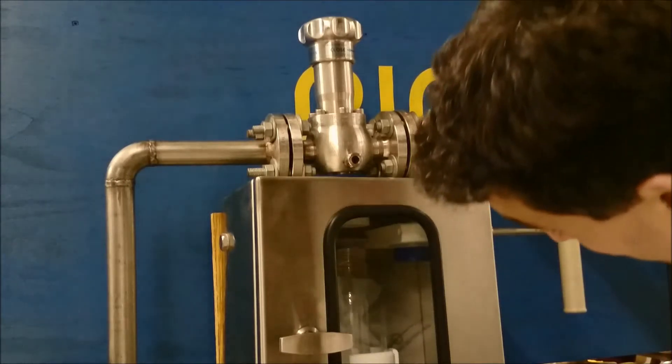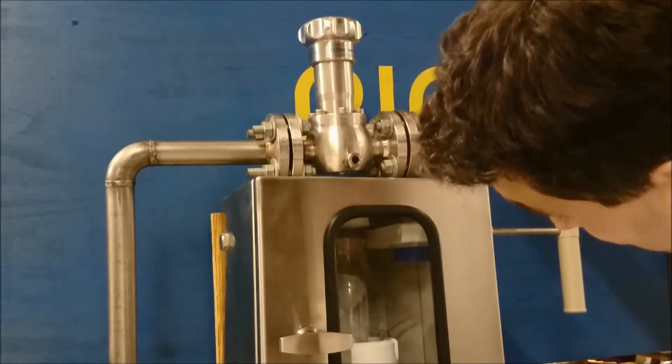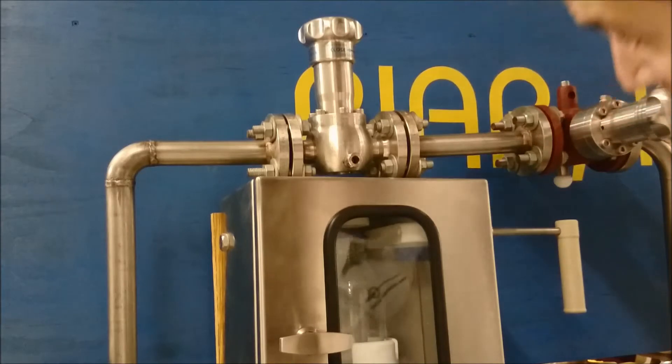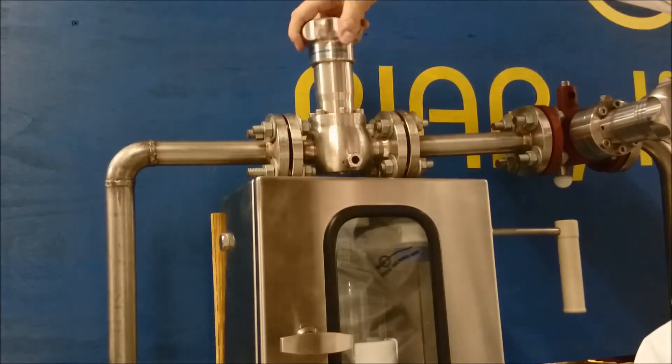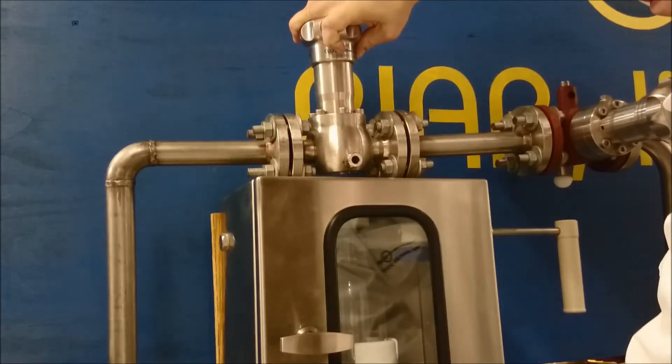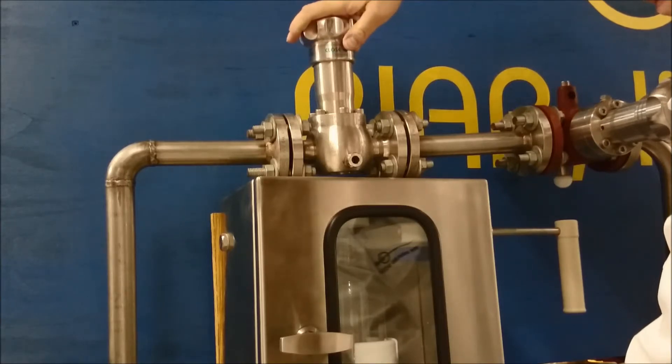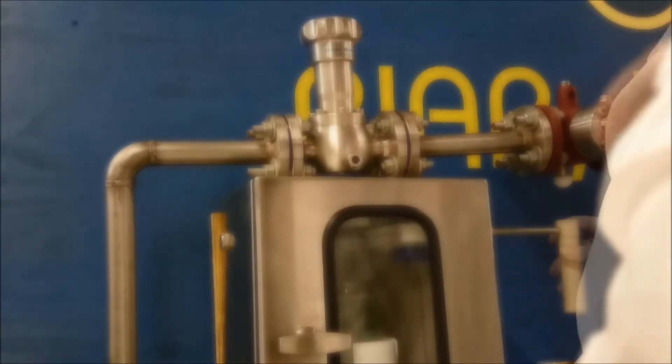He moves the cap out of the way so that the bottle can now be pushed up all the way under the valve right at the outlet in order to safely grab the sample. Once he has collected the desired amount of sample, he lowers the bottle.